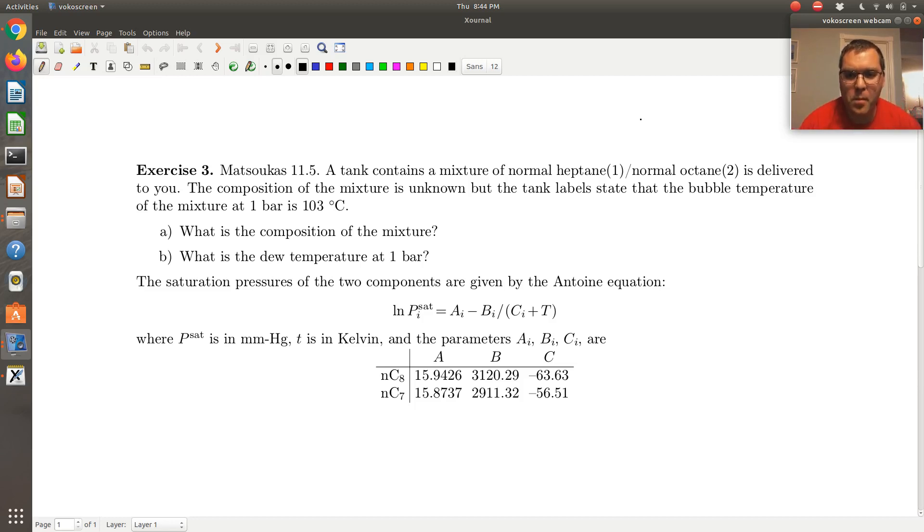Well, the first thing I'm going to do, as always, is draw a picture of a relevant phase diagram. So here now I'm thinking, do I want to draw a PXY or TXY? Well, I'm thinking a TXY, since initially we're told the bubble temperature at one bar is 103 degrees C, and then in B we're going to be asked for the dew temperature. So let me draw the TXY.